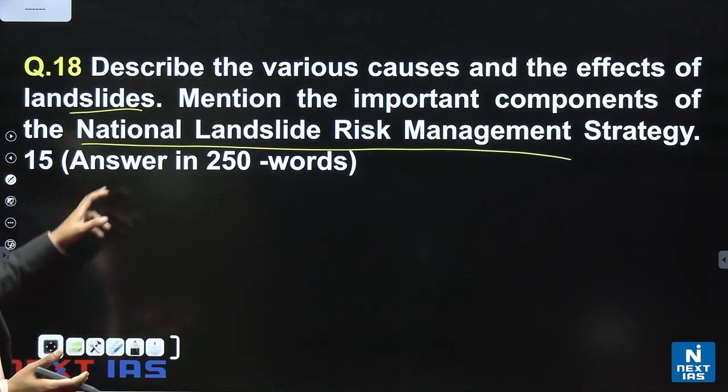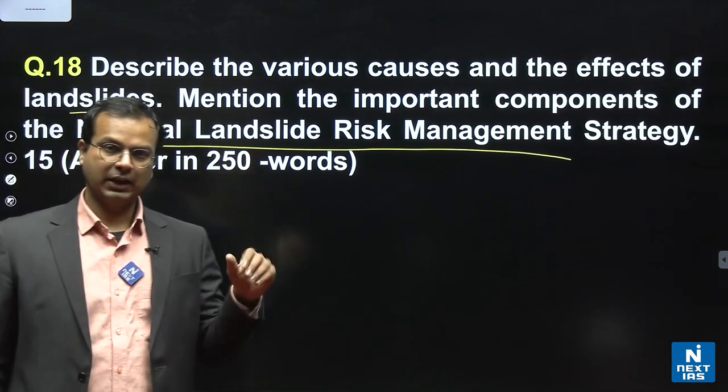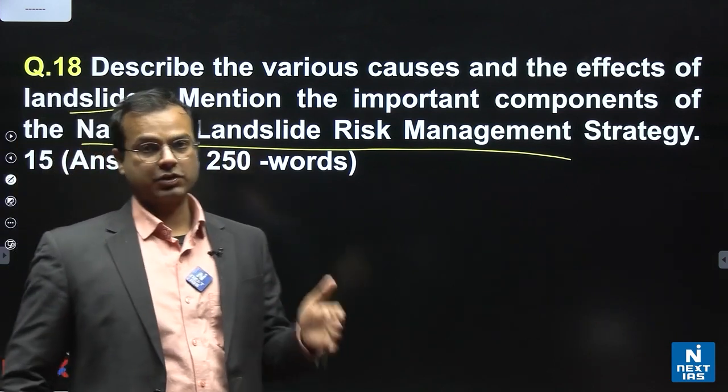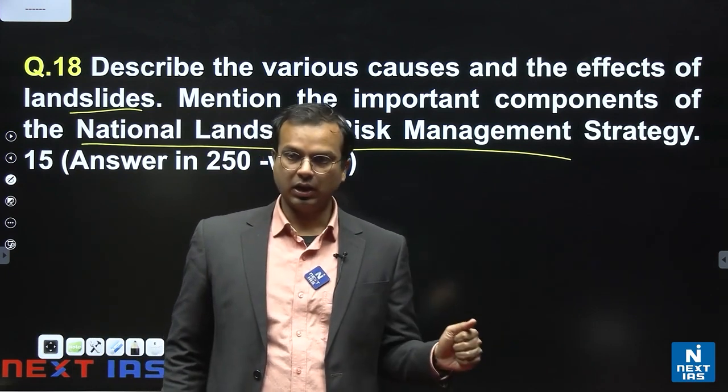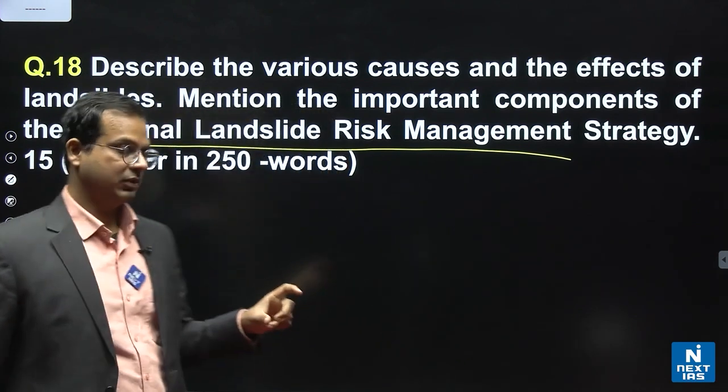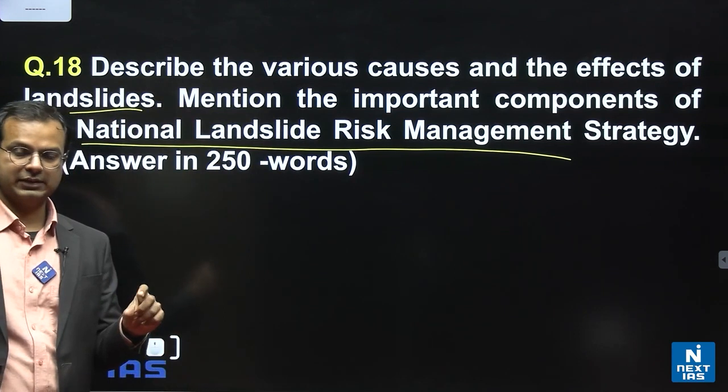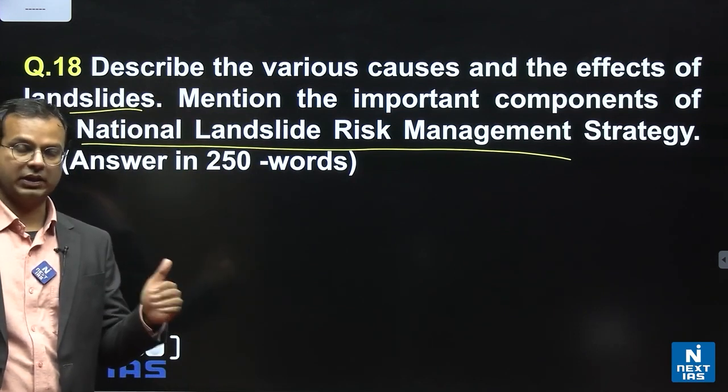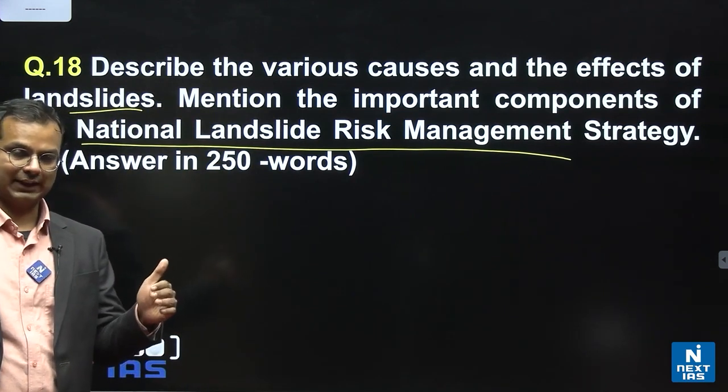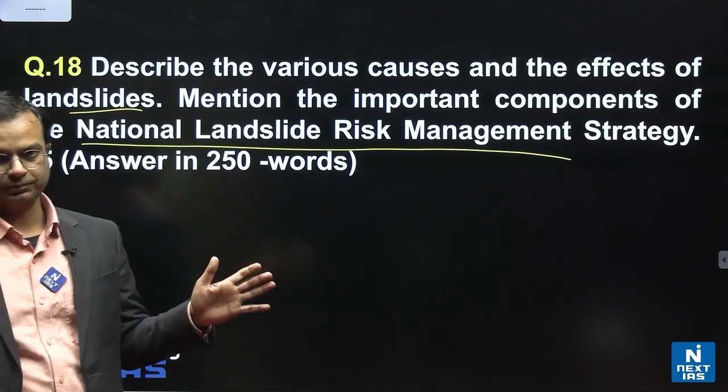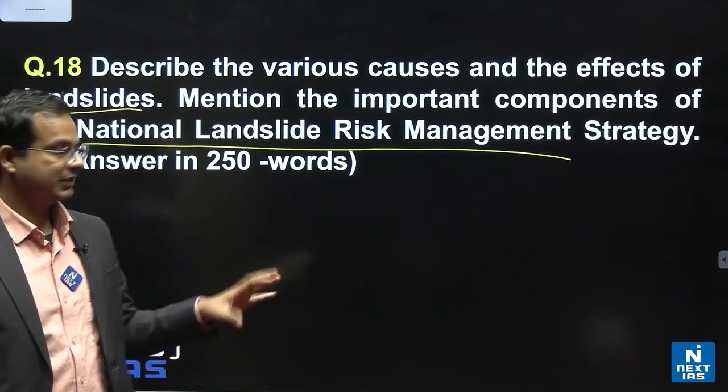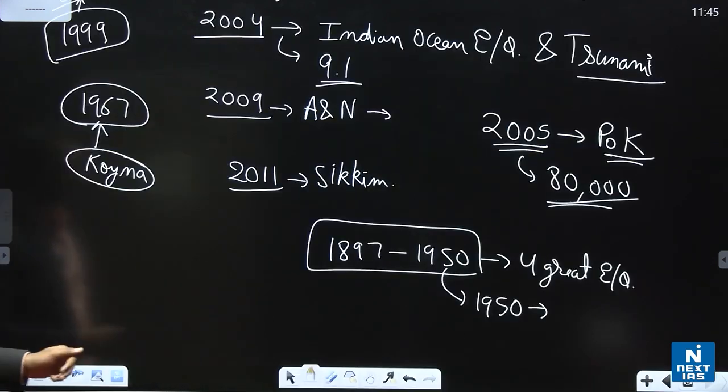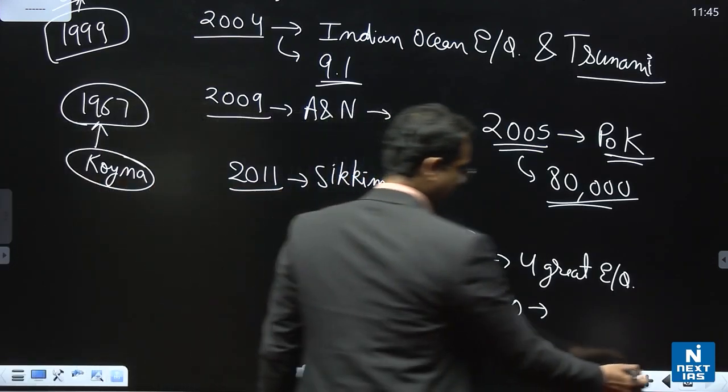Either you can start directly with the definition of the landslide - that landslide is sudden mass movement of rocks and debris down a slope under the influence of gravity - or you can just start that India is vulnerable to landslides, and especially the hilly areas or Himalayan regions are categorized as very high vulnerability zones. You can start this way, and after that write causes and effects of landslides. Let us discuss a few causes and impacts.